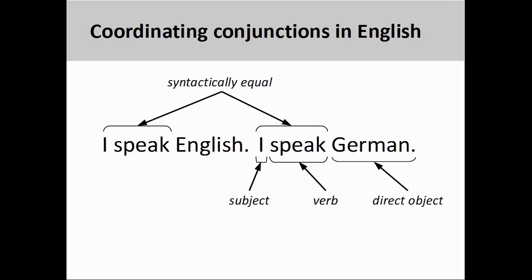On the screen you see two simple sentences. The first sentence, 'I speak English,' contains one subject — a first-person singular personal pronoun in the nominative case, 'I' — the first-person singular present tense form of a verb, 'speak,' and the direct object of that verb, 'English.' A direct object is simply a noun or pronoun that receives the action of a verb.